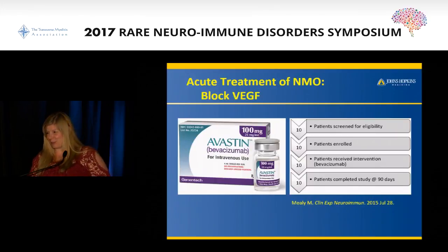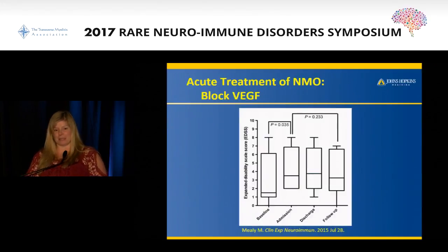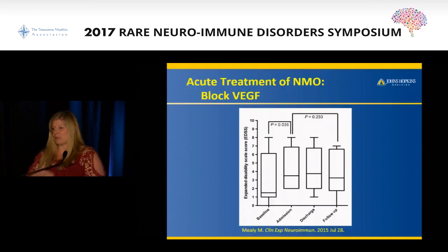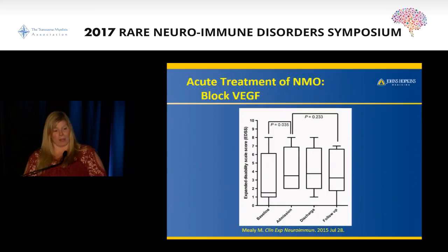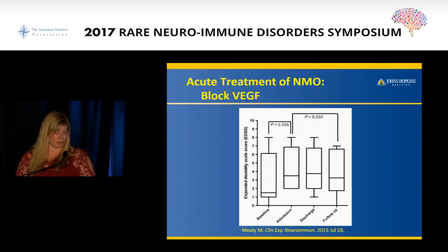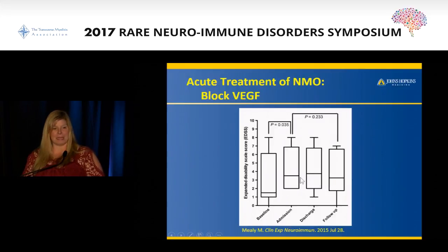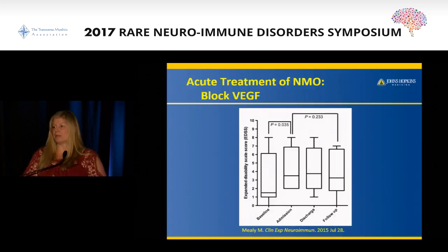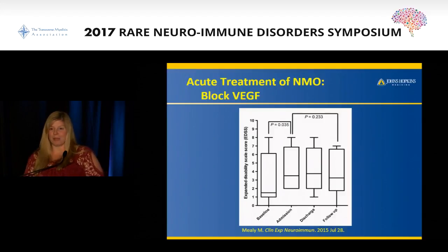We also tried another acute treatment: Bevacizumab, a medication that blocks VEGF. The idea behind it is that it seals off the blood-brain barrier. We know the immune system is getting into the central nervous system and disrupting things, so if we can shut that door, that was the point of this study. The results were not as robust - patients often did not return back to their baseline, and really stayed about as disabled as they were when they presented with a new event. It's hard to know what to make of this, because the whole point was to block off the blood-brain barrier, so they may not have gotten as bad functionally as they otherwise would have, but we have no way of knowing.